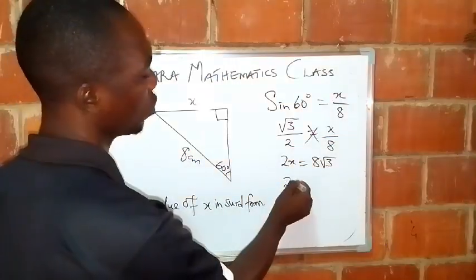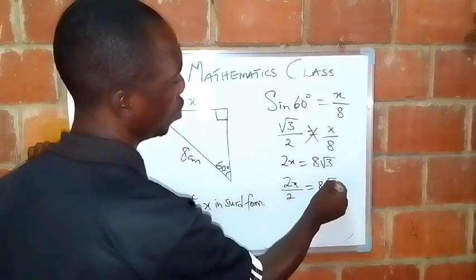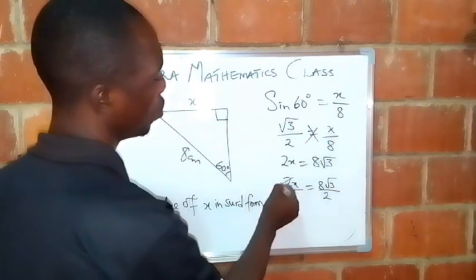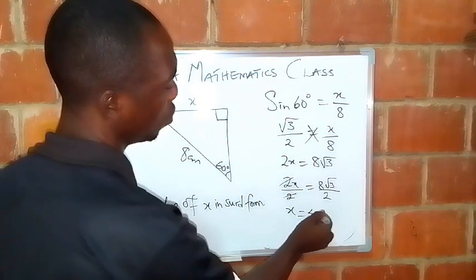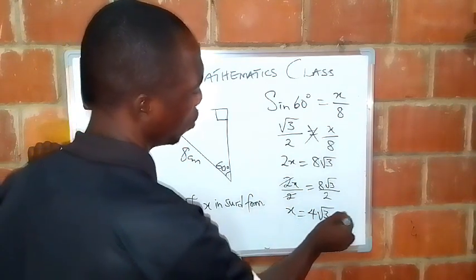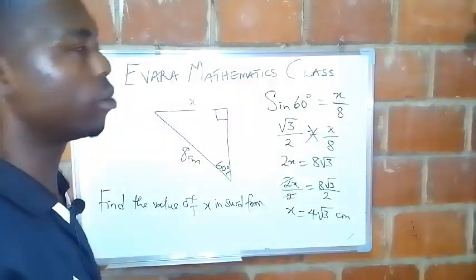Then you divide both sides by 2. 8 root 3 over 2. So then your x will be 8 divided by 2, that is 4. 4 root 3 centimeter.